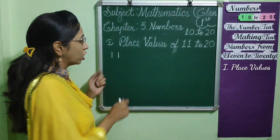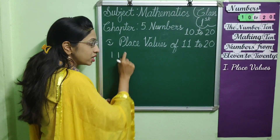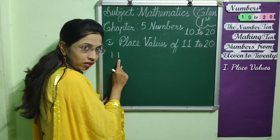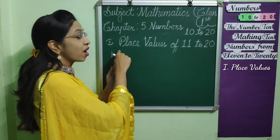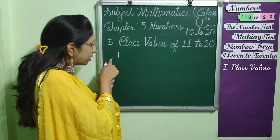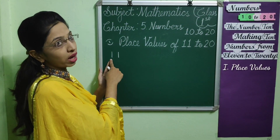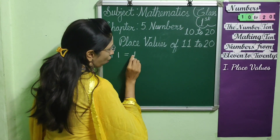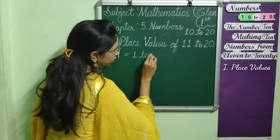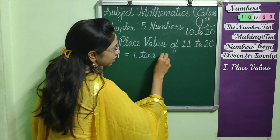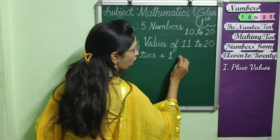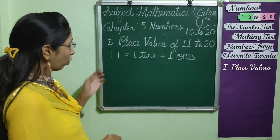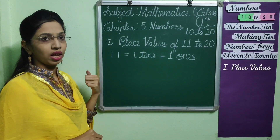We have to start from right. So, the right side — this 1 — the place value of 1 is known as 1's, and this place value of 1 is known as 10's. So, we will write 1 ten's plus 1 one's for number 11.